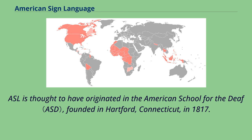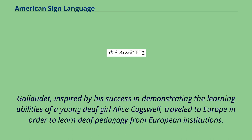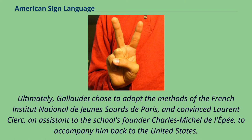ASL is thought to have originated in the American School for the Deaf, founded in Hartford, Connecticut, in 1817. Originally known as the American Asylum at Hartford for the education and instruction of the deaf and dumb, the school was founded by Yale graduate and Divinity student Thomas Hopkins Gallaudet. Inspired by his success in demonstrating the learning abilities of a young deaf girl Alice Cogswell, Gallaudet traveled to Europe to learn deaf pedagogy. Ultimately, Gallaudet chose to adopt the methods of the French Institut National de Jeune Sur de Paris, and convinced Laurent Clerc, an assistant to the school's founder Charles-Michel de Lepay, to accompany him back to the United States.